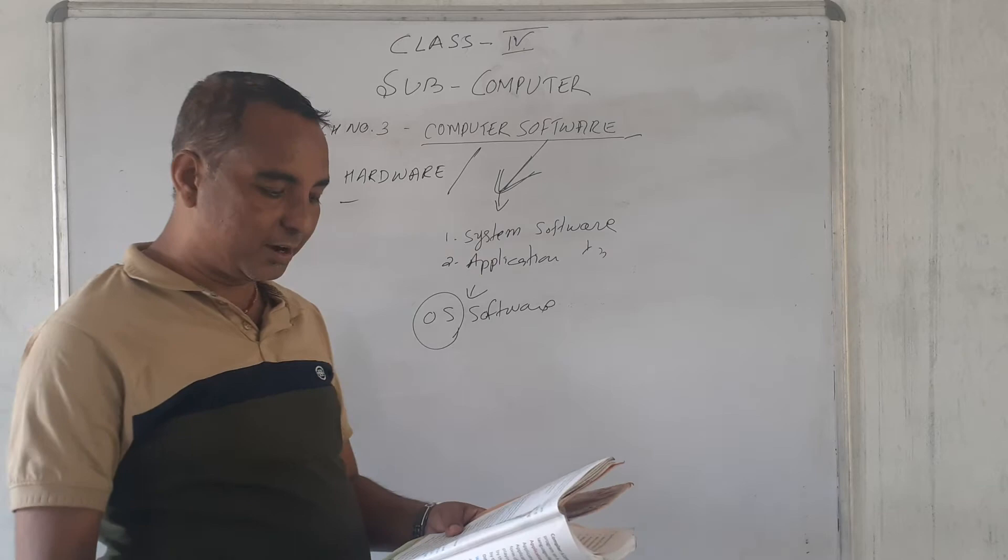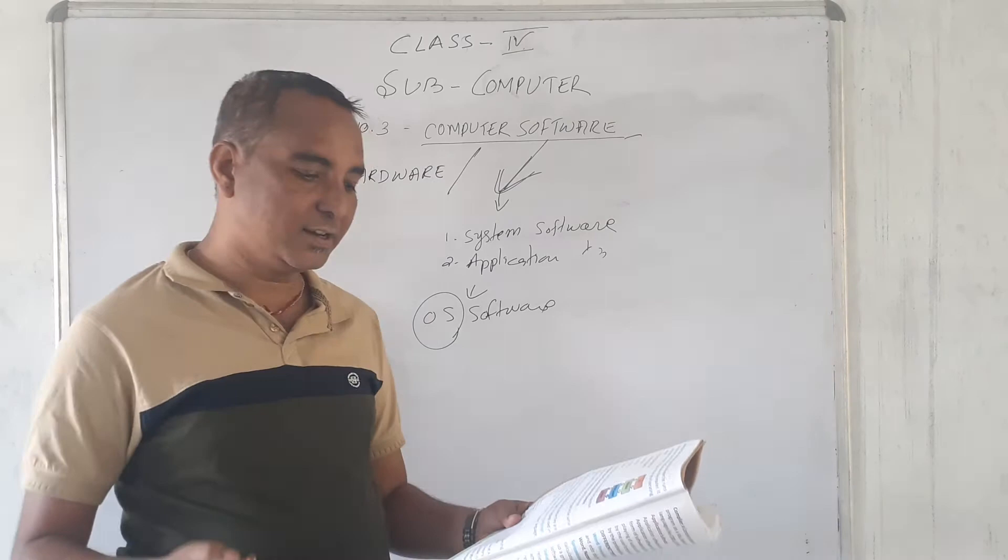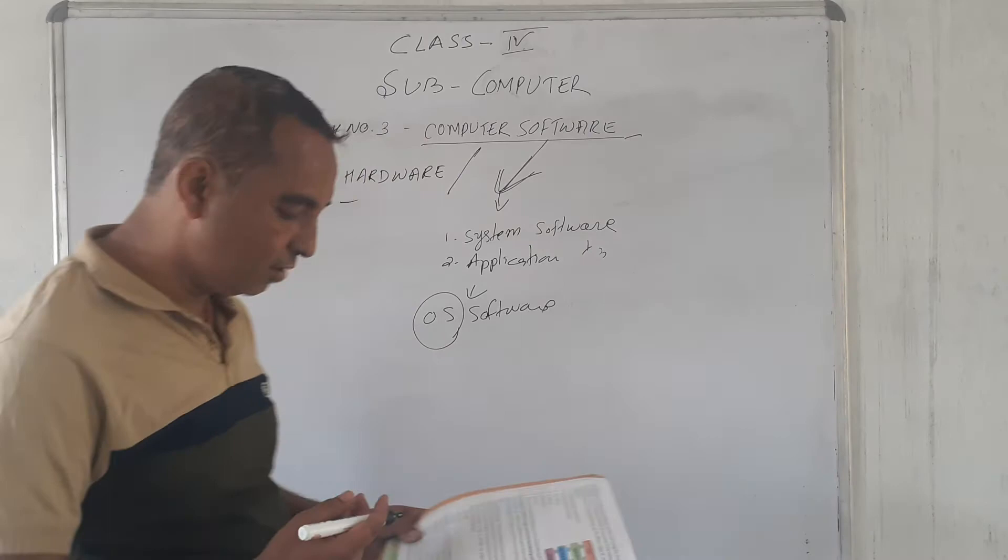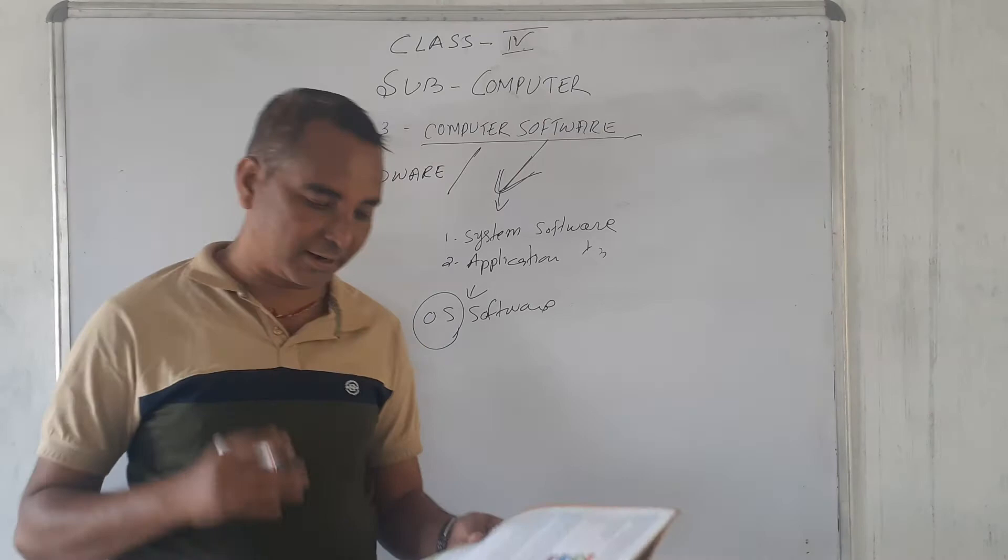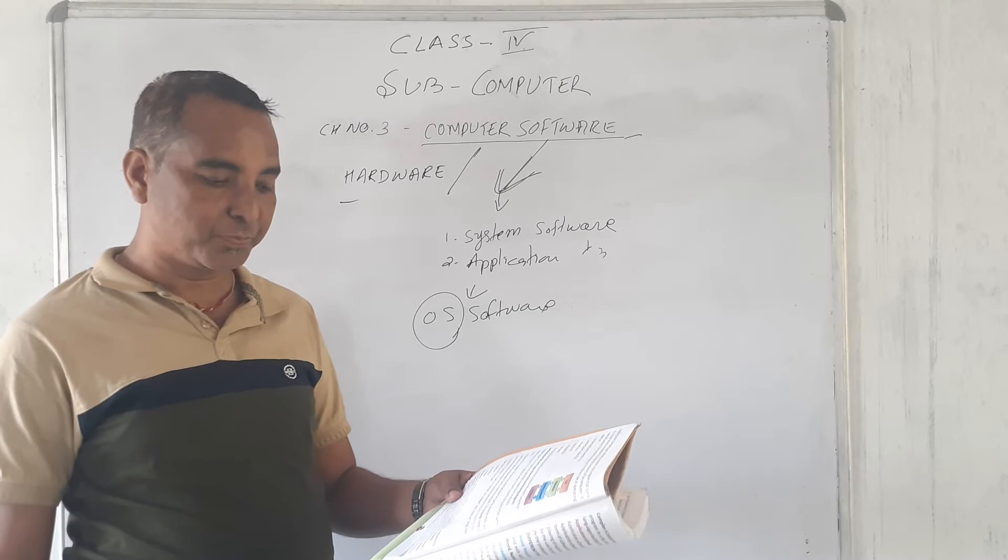Translator is used to translate any program into machine language. Translators are of three types. That is, assembler, interpreter and compiler. What is assembler? Assembler is a language translator for a low-level programming language called Assembly language. Assembly language is a symbolic language.